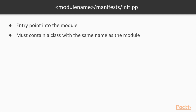Just a few more words about init.pp. When Puppet loads a module it searches for the file init.pp at the path: module-name/manifests/init.pp. In our Apache example, the module name is Apache — it looks for a manifests directory inside the Apache directory and then searches for init.pp. This is the entry point into the module, and it must contain a class with the same name as the module.